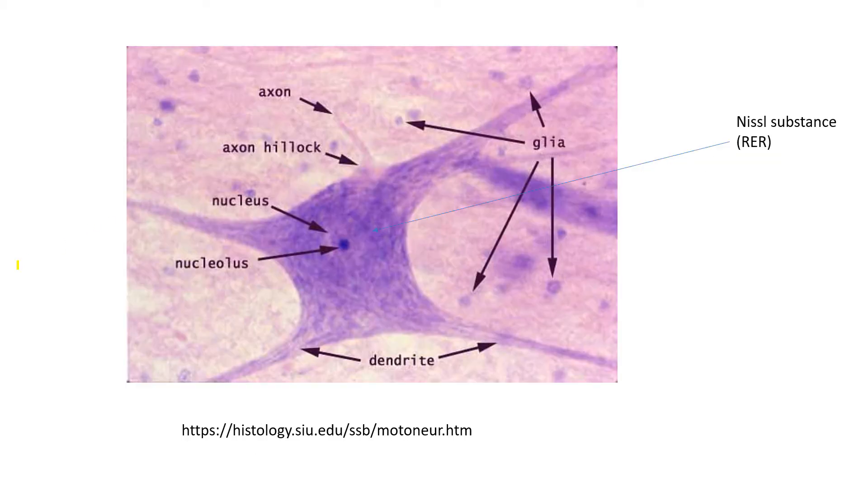This is a picture of a neuron, so we can see the structures that we talked about previously. Here we have the soma, with the nucleus inside of it, and then we have a prominent nucleolus. We have the axon, as well as these dendritic projections off of the soma.